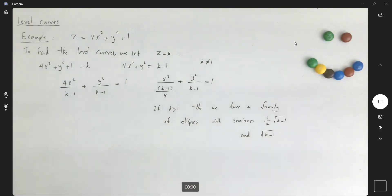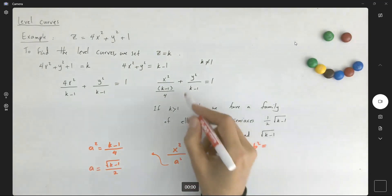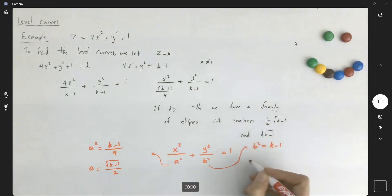Recall that when we talked about ellipses, we have x squared divided by a squared plus y squared divided by b squared equals to 1. In this case, your a squared is equal to k minus 1 divided by 4. So a becomes square root of k minus 1 divided by 2. And your b squared is equal to k minus 1.